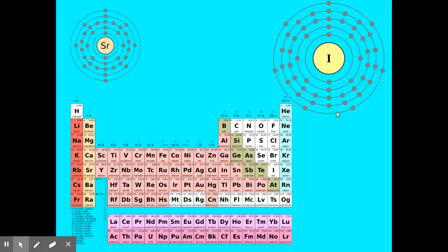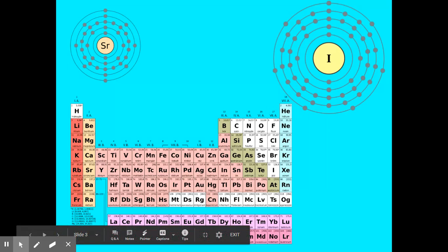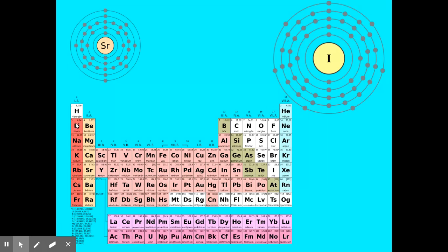Iodine has 7 electrons in the outer level and is in group 17. Since we're setting aside the d block, we count the groups as 1, 2, then skip to 3 through 8 for the P block — so group 17 gives 7 valence electrons. Nitrogen is in group 15, or group 5 if we're not counting the d block, so it has 5 valence electrons.